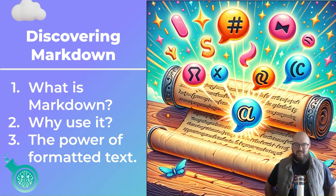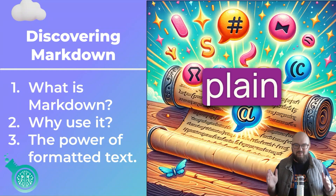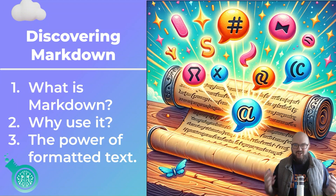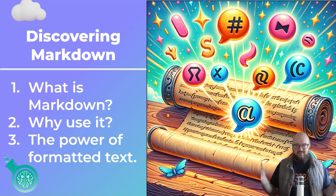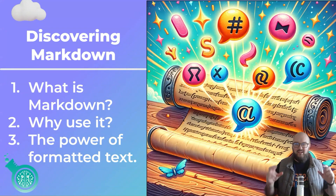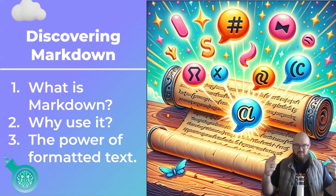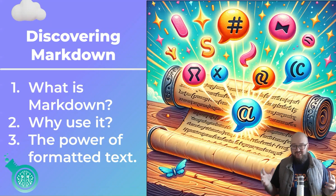So what is markdown? Technically it's a lightweight markup language with plain text formatting syntax. All you need to know is: let's say you're in a Google Doc or a Word doc and you bold something, italicize something, or create a heading — you're seeing that a specific visual way. But the way the computer sees it is more like symbols that enclose something, telling it to visualize or tag it in a specific way.